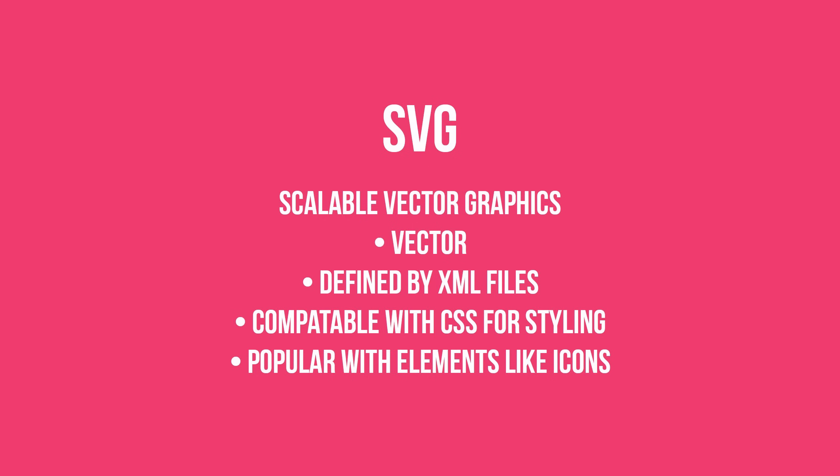SVG, or Scalable Vector Graphics, is also a vector file format but is a special case because it's defined by XML files. As a web standard for vector graphics, it has unique capabilities — you can use CSS styling on SVGs to produce certain looks, and it's very popular for icons because you can program SVG positioning. For example, interactive maps exported from Illustrator as SVG can be brought into the web where you can programmatically color different map shapes by properly naming your layers.